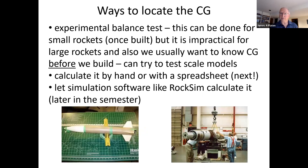There are ways to locate the CG experimentally — you can balance the rocket or hang the rocket — but the bigger the rocket gets, the more of a nuisance it is to actually do this measurement. We often want to know the answer before we build the rocket, just to make sure the rocket is likely to be healthy. So it's handy to have a way to calculate CG even before the rocket has been constructed, using the planned locations of all the parts and their weights. RockSim and OpenRocket will calculate this for us.